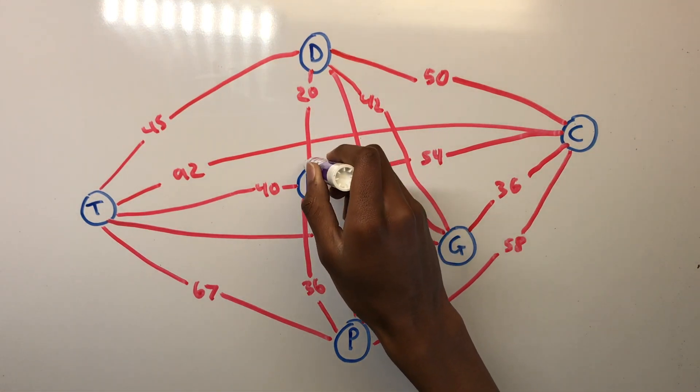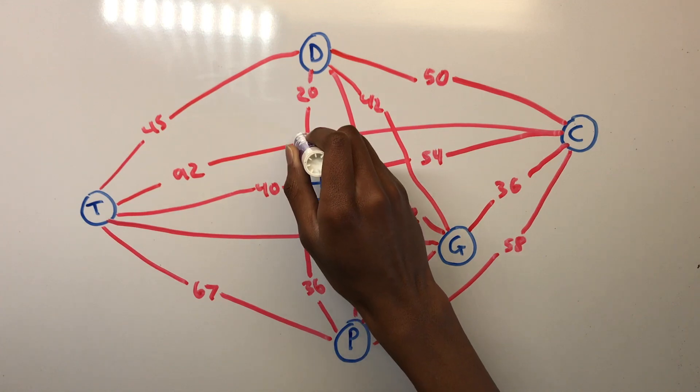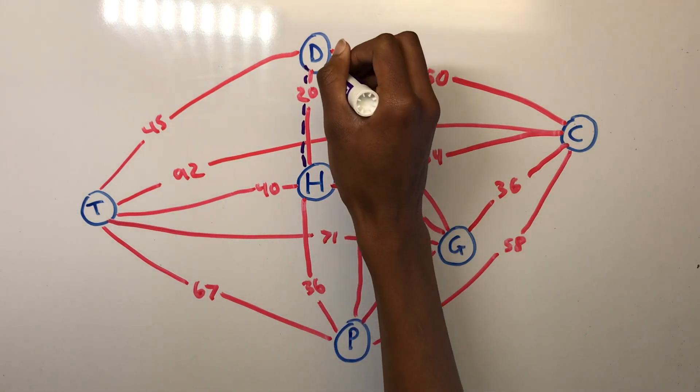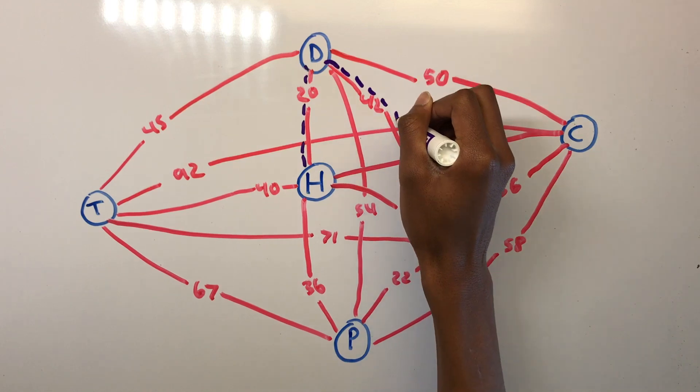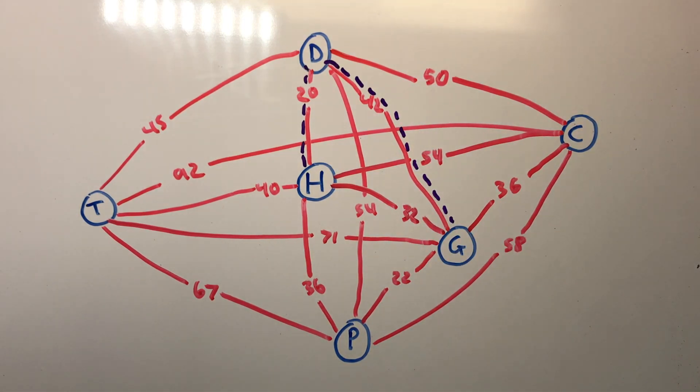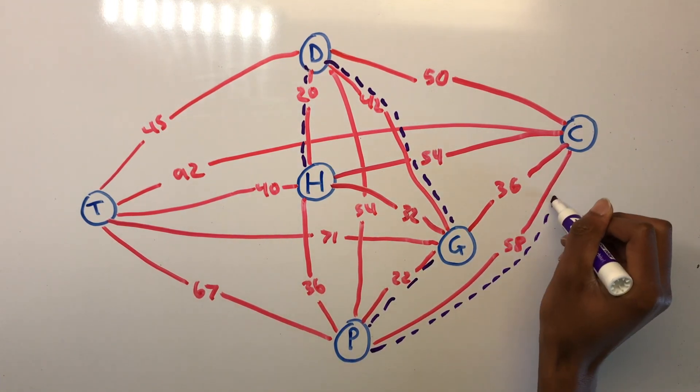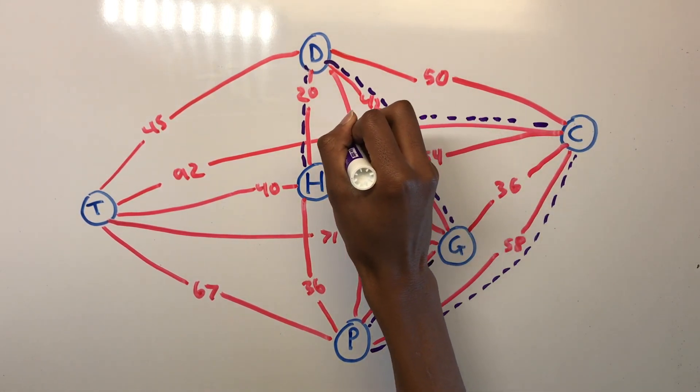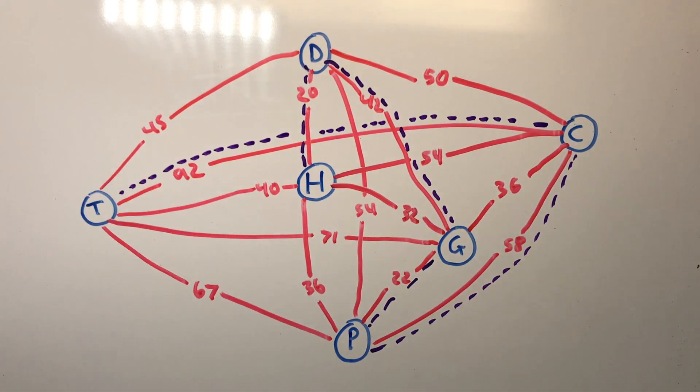If we make a complete graph where every node is connected by a weighted edge as follows, then we can perform the greedy algorithm. Here is how the algorithm will work. Starting at H, we'd want to find a tour that hits every vertex but returns to H. We see that the edge from H to D is the cheapest edge, so we take that one first. From D, we see that either T or G is the cheapest edge, so we go to G next since it's alphabetical. From G, we see that G to P is the next cheapest edge, so we go to P next. From P, that leaves the only option of going to C or T, since all the other nodes have been visited. We see that C is the cheapest edge from P, so we go to C. From C, we go to T, and then back to H to complete the tour.